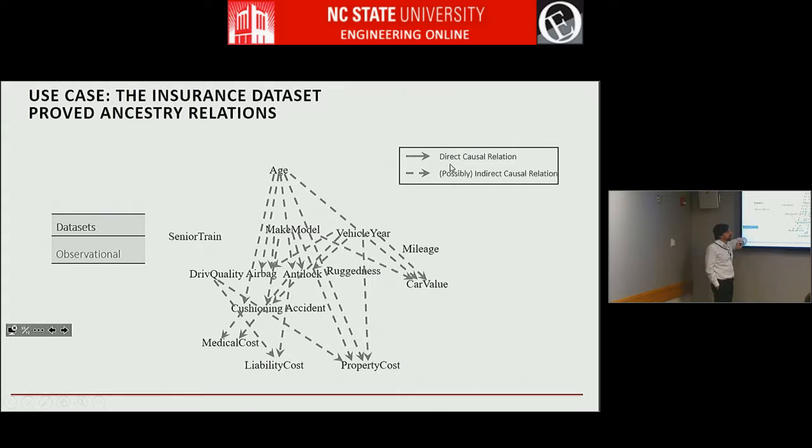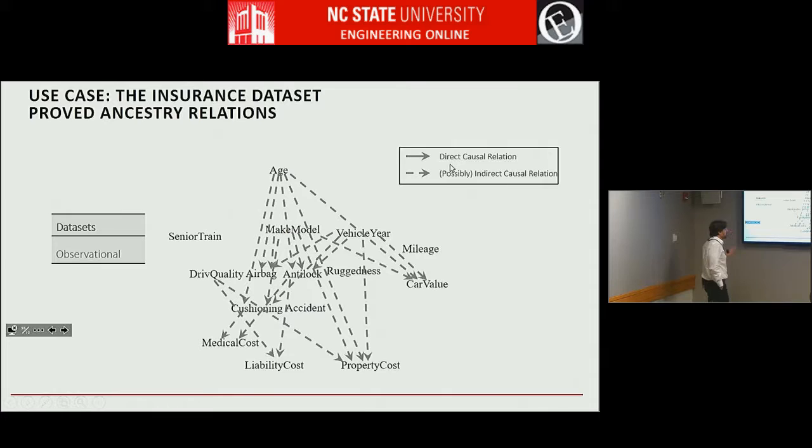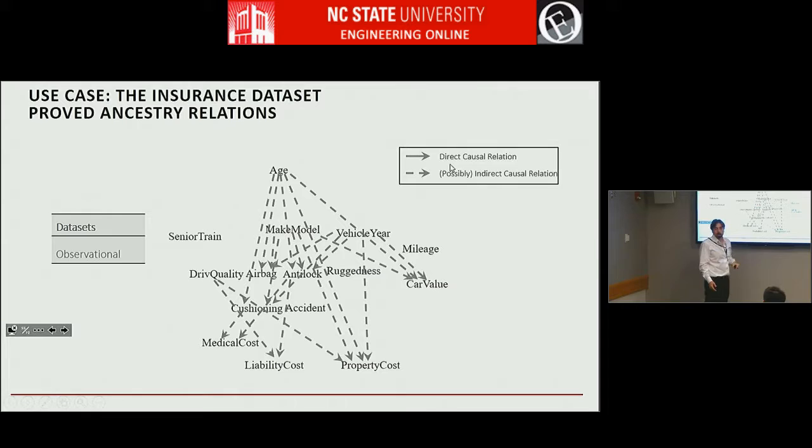We input the observational data only to the algorithm and query what direct or indirect causal relationships can be proven to have to be there. You can actually prove a lot of them — for example, that cushioning causally affects medical costs. You can go beyond associations.